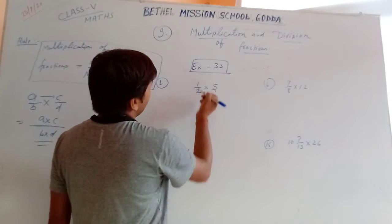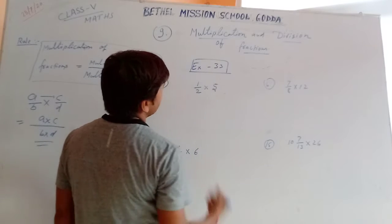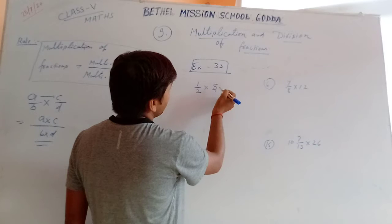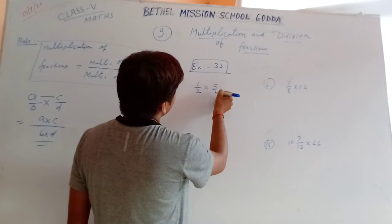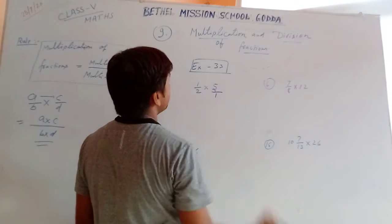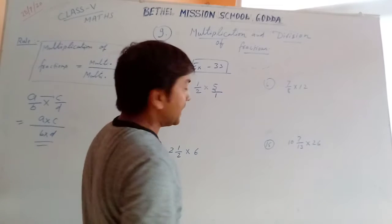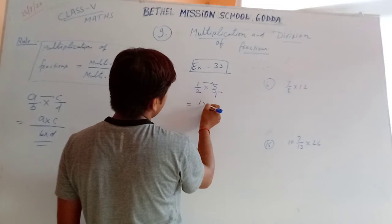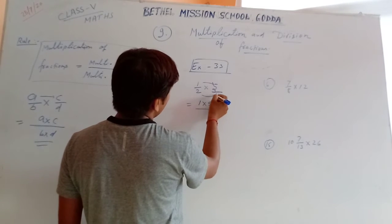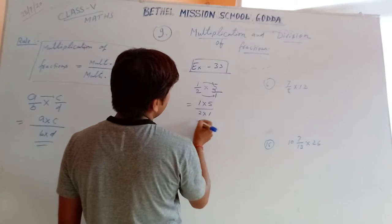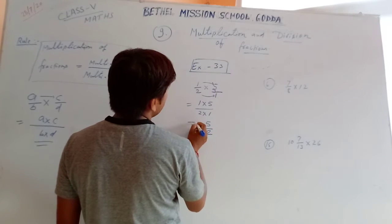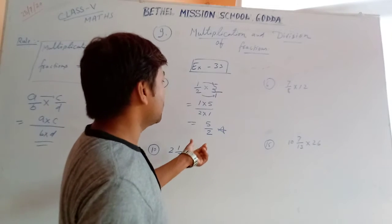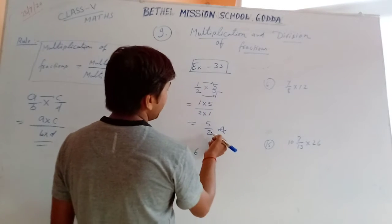Here given 1 over 2 and another is given 5. This is only a numerator, the denominator is not given, so we can write 1 as the denominator. So now the multiplication: 1 multiply 5, you can multiply 1 into 5 and 2 into 1.